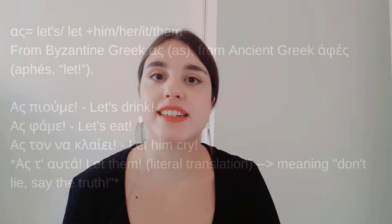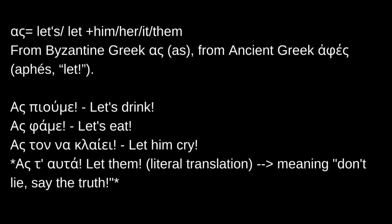Now let's see ΑΣ, which is another particle used quite often in Modern Greek. ΑΣ, most of the time, is used before a verb instead of LET in English. Ας πάμε — Let's go. Ας κλάψει — Let him cry.